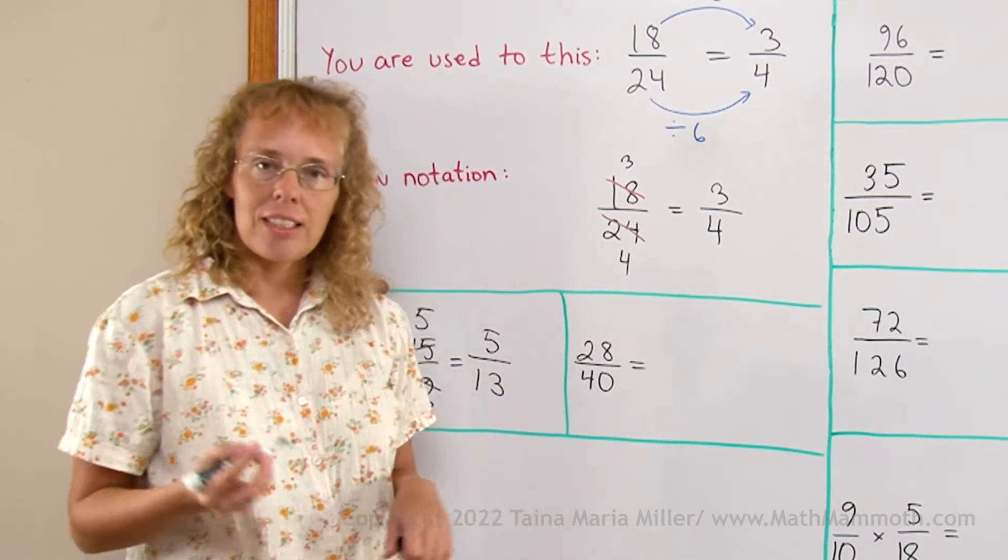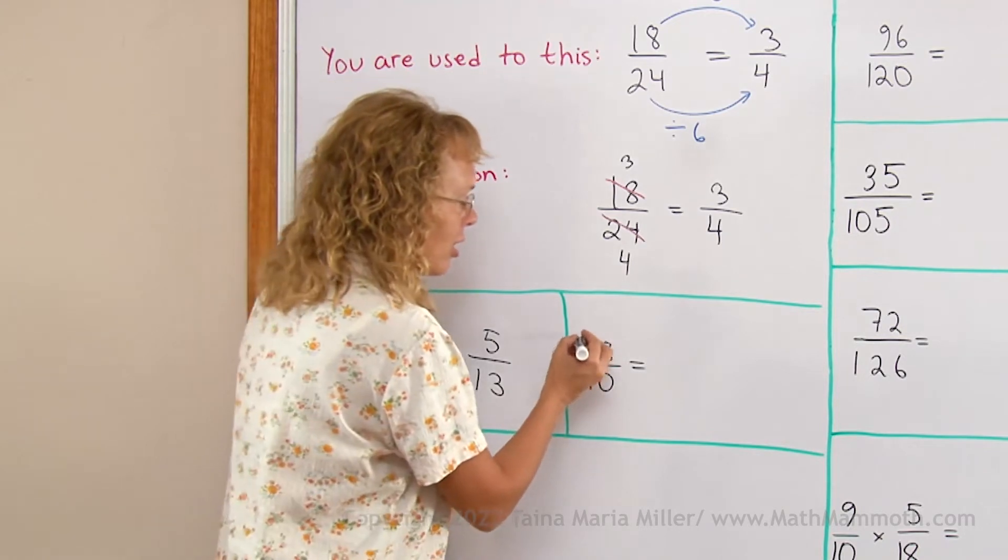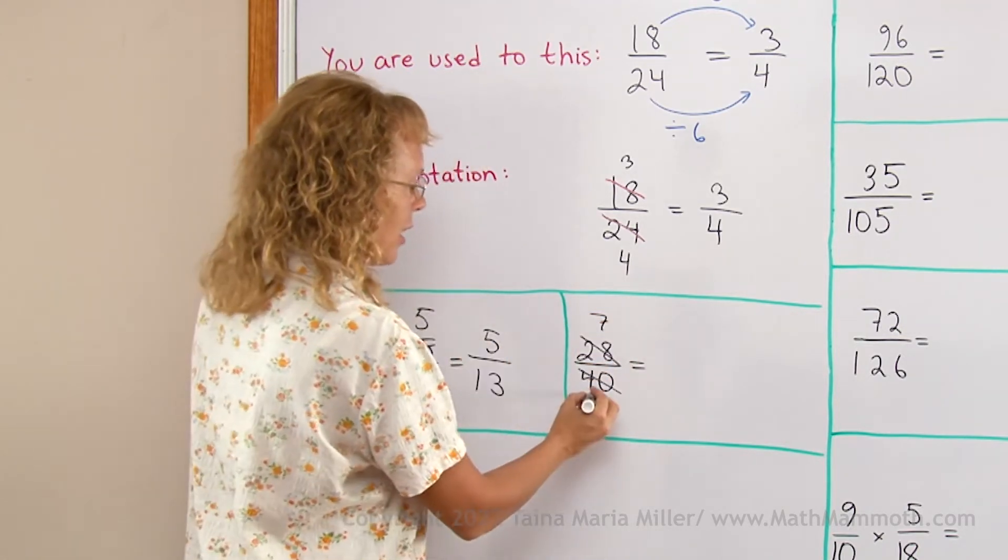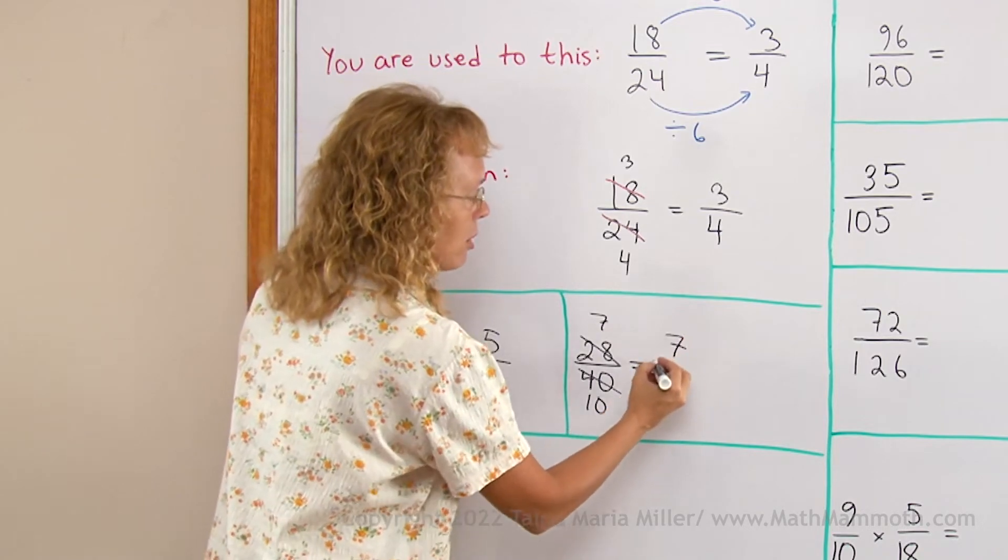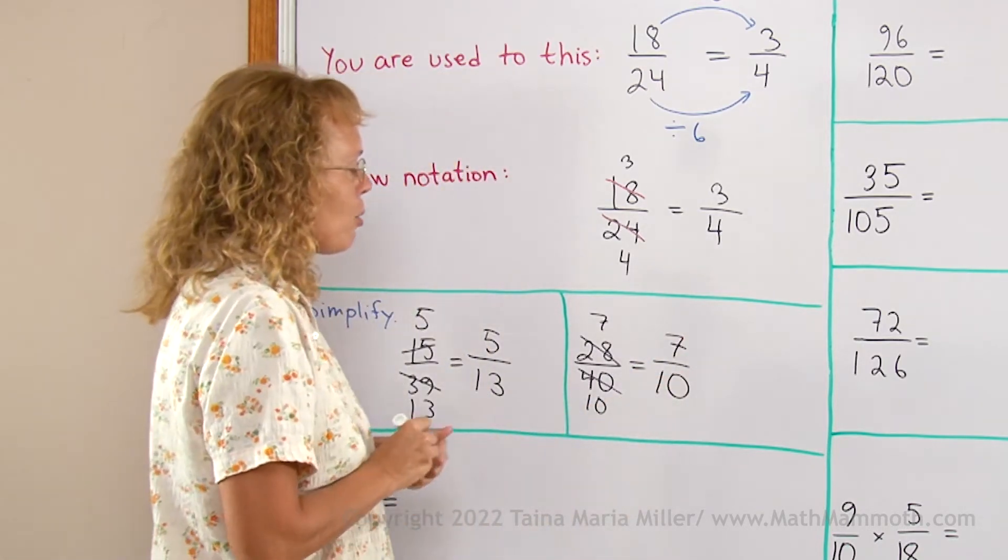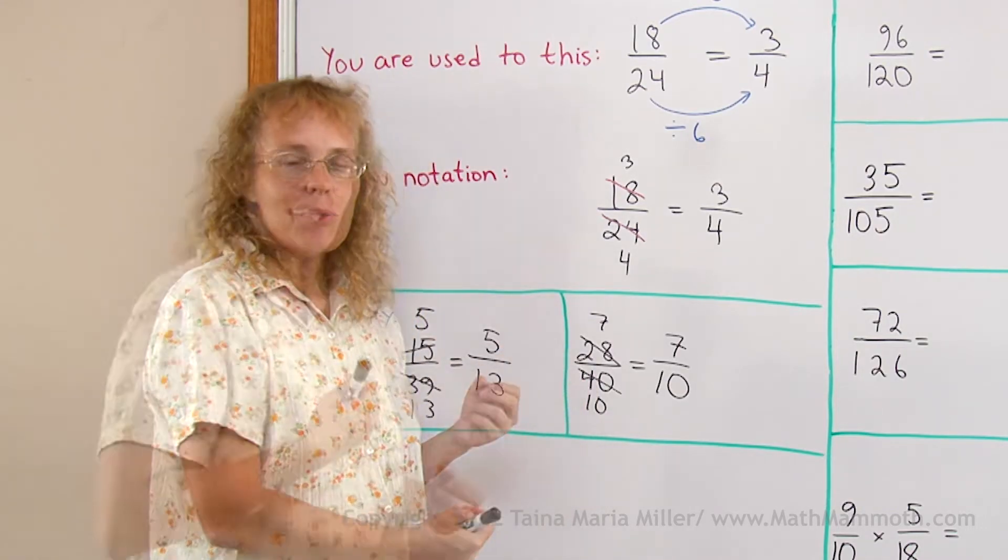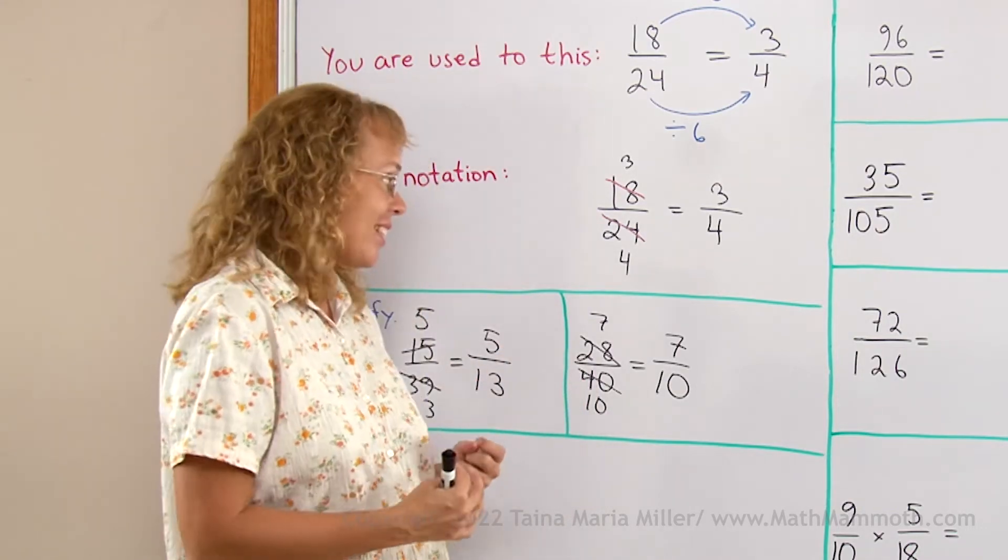Another example: both of these are divisible by 4, so I divide by 4 and get 7. I divide by 4 I get 10, so this is equal to 7 tenths. Now you might not see any benefit yet with this new notation, but as things get more complex you will see it.